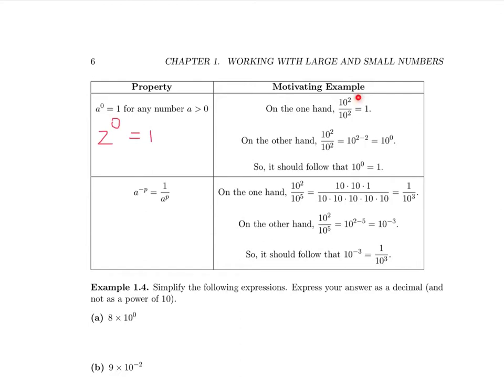To understand why any positive number raised to the 0 should equal 1, consider this: on the one hand, 10 squared divided by 10 squared equals 1. On the other hand, using exponent properties, we subtract the exponents and get 10 to the 0. Therefore, 10 to the 0 and 1 must be the same thing. We could make this same argument with any base — 2, 3, 5, or any positive number. So this result is true for any positive number.